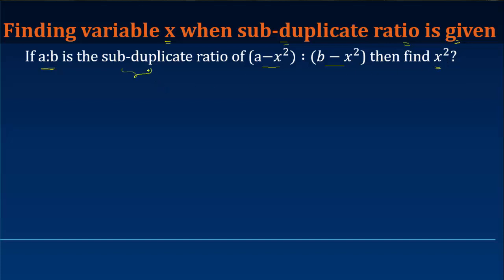Now, we all know what is a subduplicate ratio. If you have to find out the subduplicate ratio of any two numbers x and y, that is equal to x divided by y, and you actually take a square root of both the numerator and the denominator.